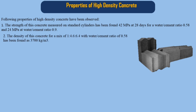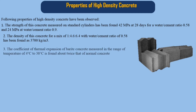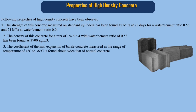2. The density of this concrete for a mix of 1:4.6:6.4 with a water-to-cement ratio of 0.58 has been found to be 3700 kg per cubic meter. 3. The coefficient of thermal expansion of barite concrete, measured in the range of 4°C to 38°C, is found to be about twice that of normal concrete.